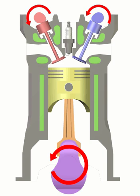Combustion, also known as power or ignition. This is the start of the second revolution of the four-stroke cycle. At this point the crankshaft has completed a full 360-degree revolution. While the piston is at TDC, at the end of the compression stroke, the compressed air-fuel mixture is ignited by a spark plug in a gasoline engine or by heat generated by high compression in diesel engines, forcefully returning the piston to BDC. This stroke produces mechanical work from the engine to turn the crankshaft.